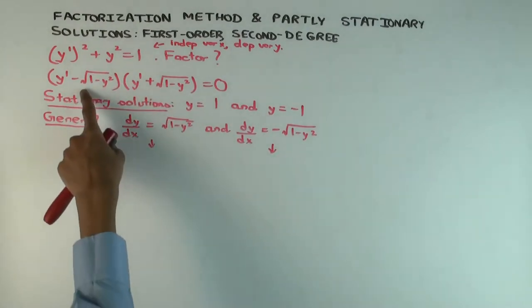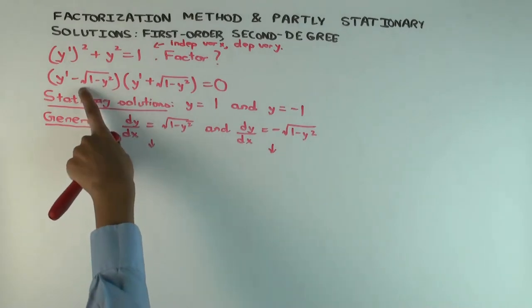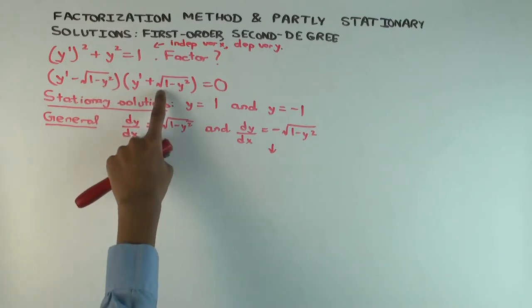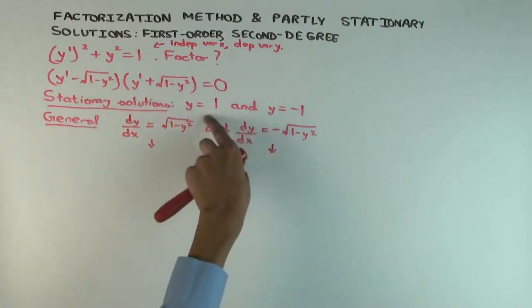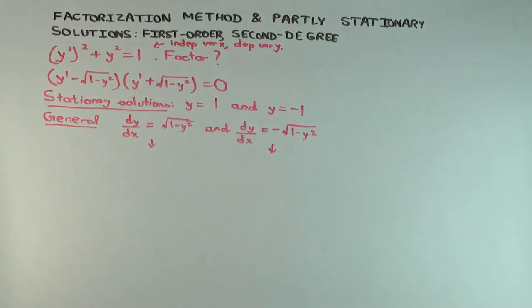What are the stationary solutions for this? One and negative one. What about the stationary solutions for the other equation? Also one and negative one. Both of these have these two stationary solutions.